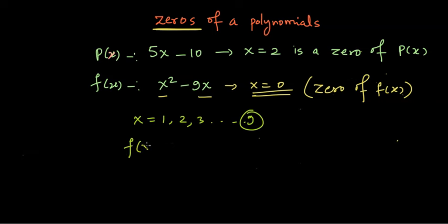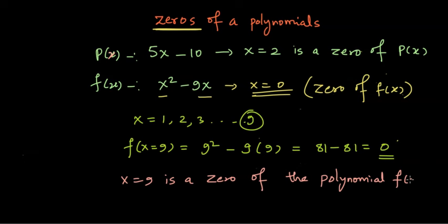So let's check. f(9) makes the polynomial as 9² because x equal to 9 minus 9 times 9, and that gives me 81 minus 81, and that makes the given polynomial equal to zero. And so x equal to 9 is a zero of the polynomial f(x).